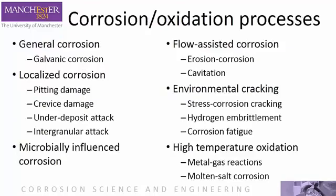Generally, different types of corrosion are classified under six main headings: general corrosion, localized corrosion, microbially influenced corrosion, flow-assisted corrosion, environmental cracking, and high temperature oxidation. In this presentation, we'll go through each of these in turn, hopefully showing you some interesting images to illustrate the processes involved.